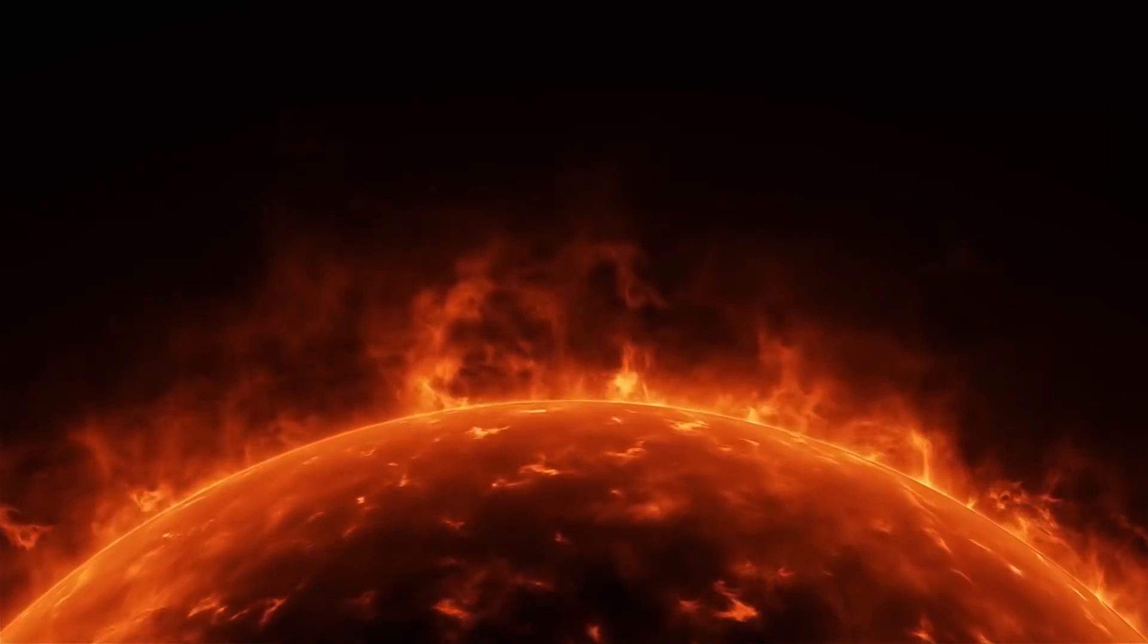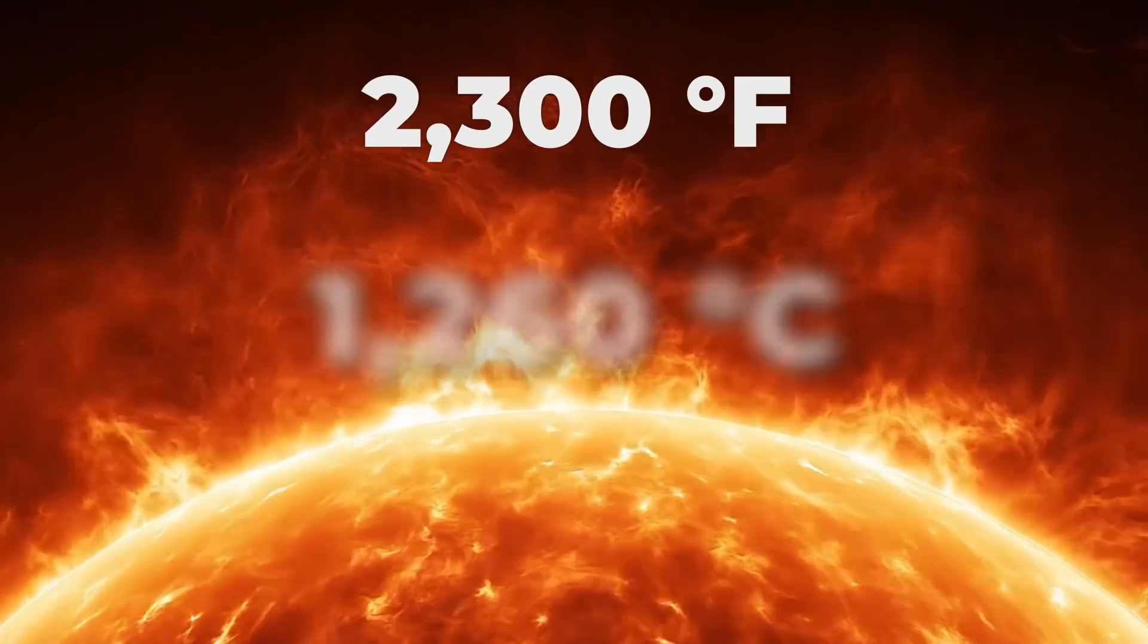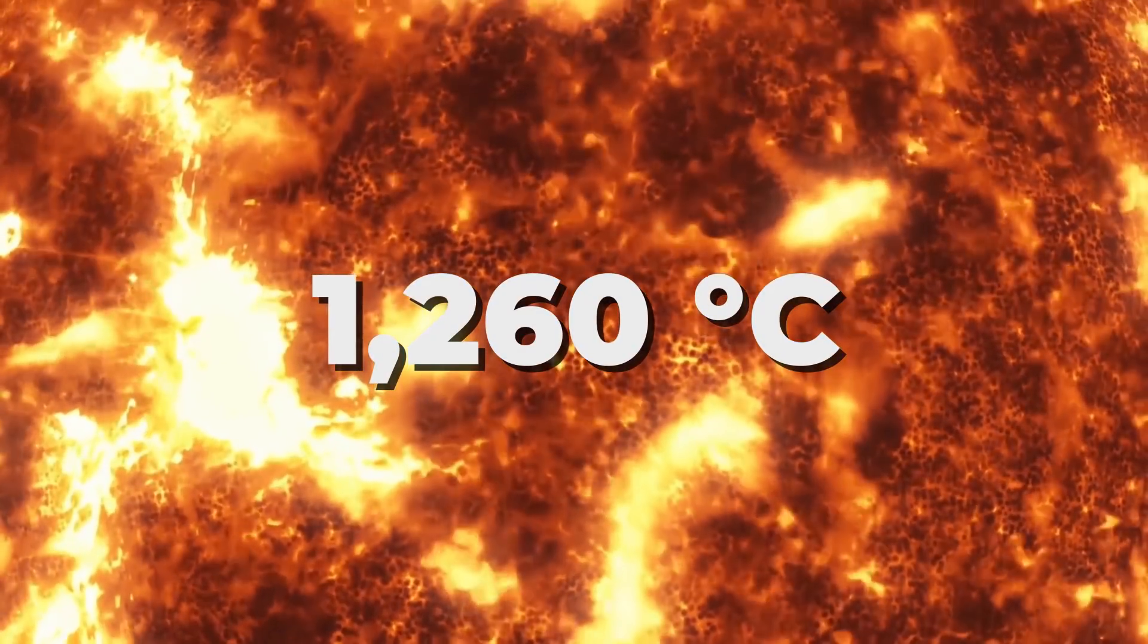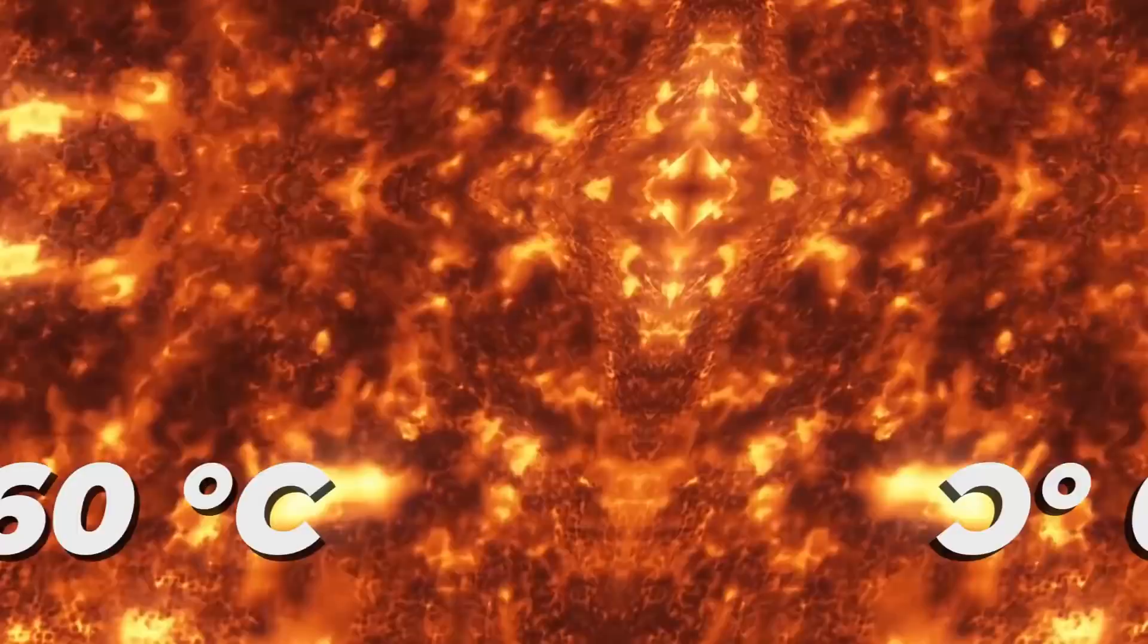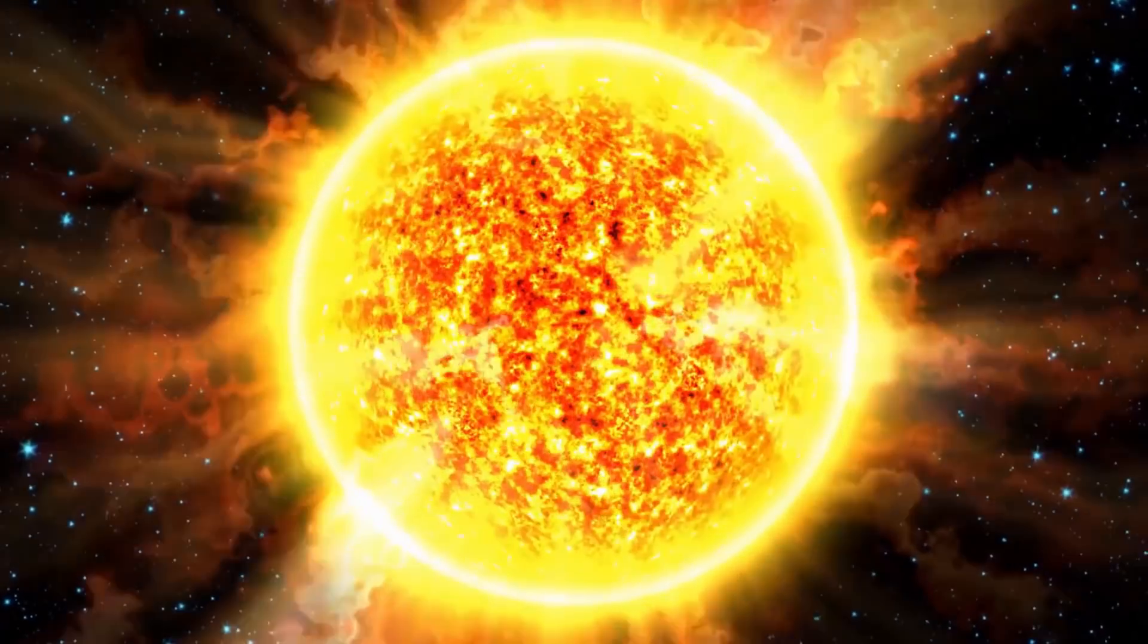The temperature on CW Leonis is about 2300 degrees Fahrenheit, or 1260 degrees Celsius. As for our star, it's about 10,000 degrees Fahrenheit at the surface.